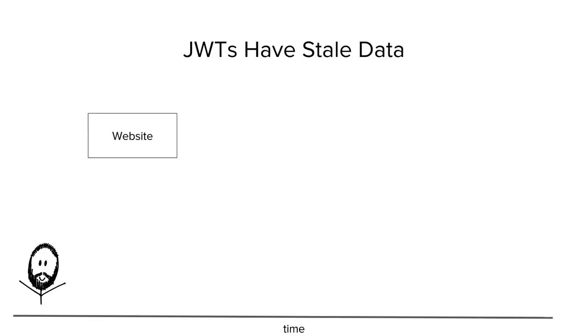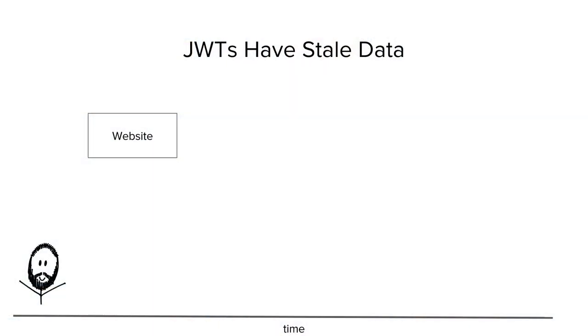The last point: JWTs have stale data by design. One of the principles in the security world is that caching is bad — caches are designed to be out of date by design. If you're using out-of-date authentication or authorization information to check someone's permissions, that is inherently bad. A lot of people just don't think about this when they're using tokens.